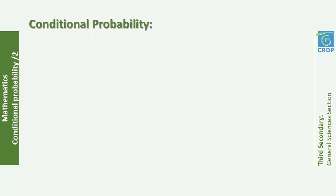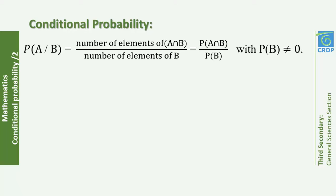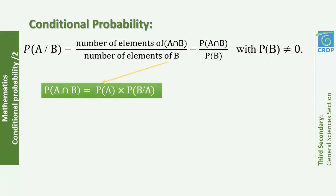First, let's go over the concepts from the first session. The conditional probability, denoted P(A|B) and read 'P of A knowing B', is equal to the probability of event A assuming that event B has already occurred. We limit the outcomes by event B and then check the probability of event A. So P(A|B) = P(A∩B) / P(B), with P(B) ≠ 0.